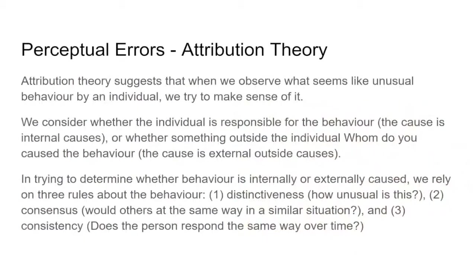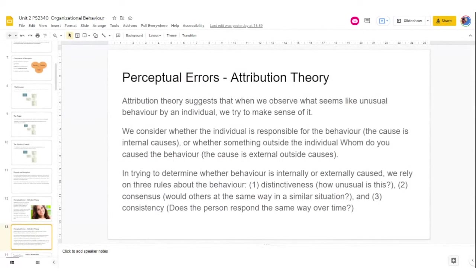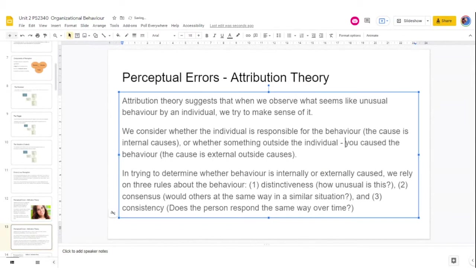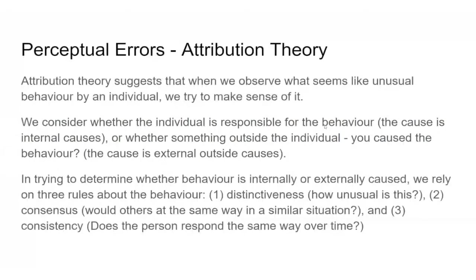Attribution theory suggests that when we observe what seems like unusual behavior, we try to make sense of it. We consider whether the individual is responsible for the behavior — maybe she's a happy-go-lucky, positive, wonderful person. Or whether something outside the individual caused it. Is it internal — the person smiling because they feel good — or is it external — they're smiling because of you? In trying to determine whether behavior is internally or externally caused, we rely on three rules: distinctiveness, consensus, and consistency.